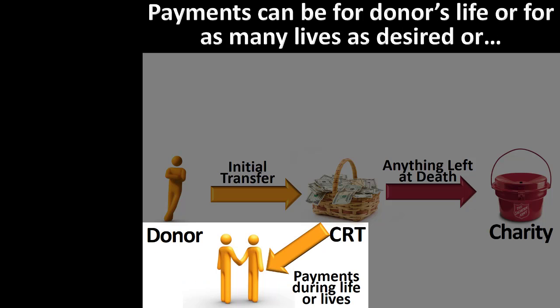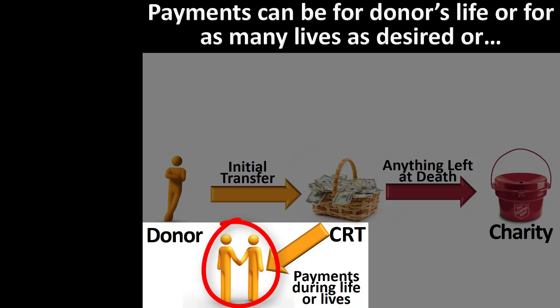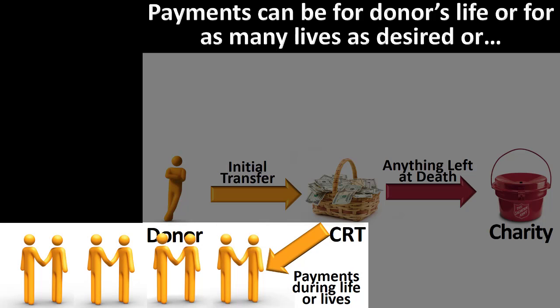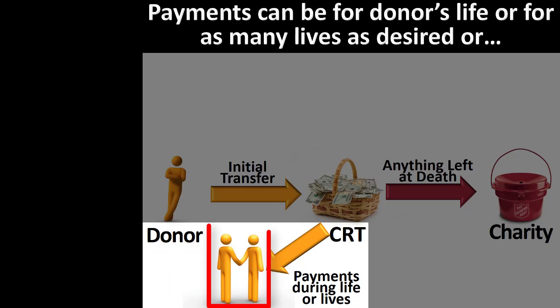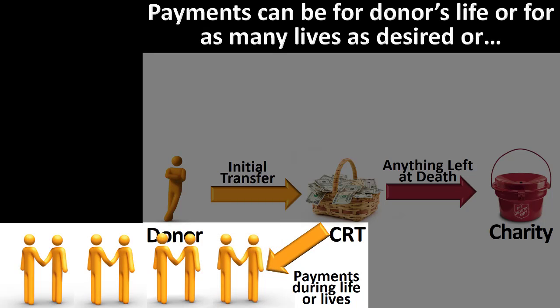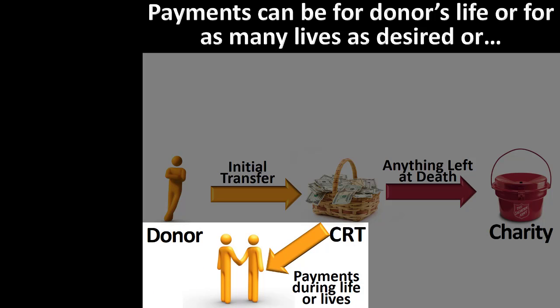Although payments are typically made for the donor's life, or the joint lives of the donor and the donor's spouse, a charitable remainder trust can pay for any number of lives. The charitable gift annuity is limited to a maximum of two lives, but no such limitation exists for charitable remainder trusts. The only requirement being that the individuals were alive at the creation of the charitable remainder trust.